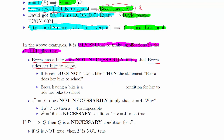If Becca does not have a bike, then the statement 'Becca rides her bike to school' must be false. Becca having a bike is therefore what we call a necessary condition for her to ride her bike to school. So her riding her bike to school was a sufficient condition for her to have a bike. However, her having a bike is a necessary condition for her to ride her bike to school — although she may not ride her bike to school, it is necessary for her to do so.